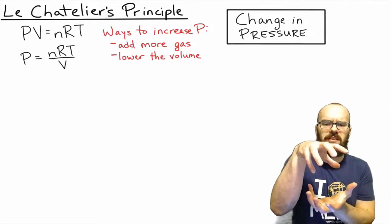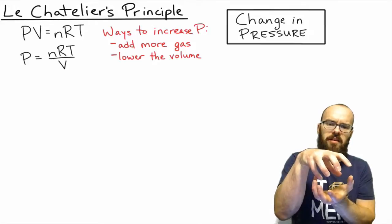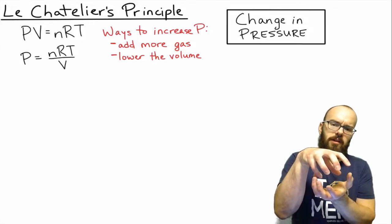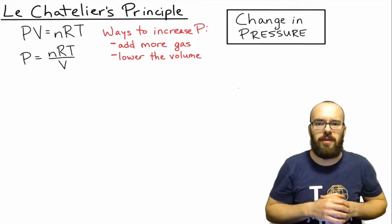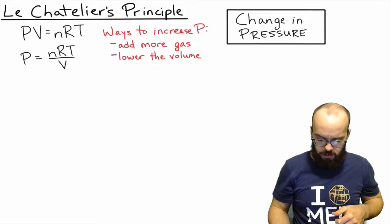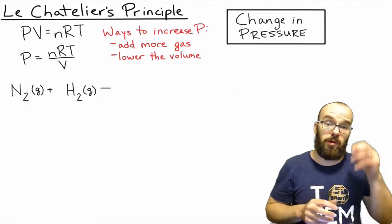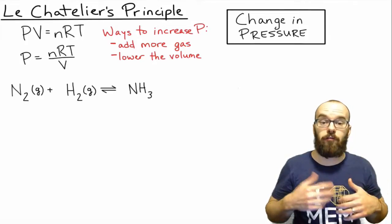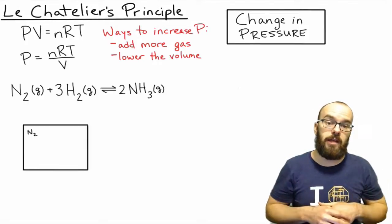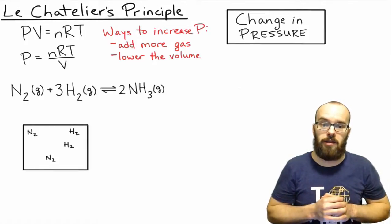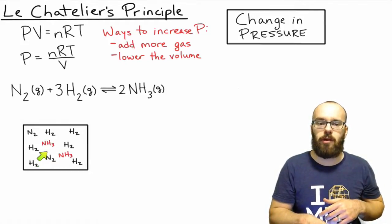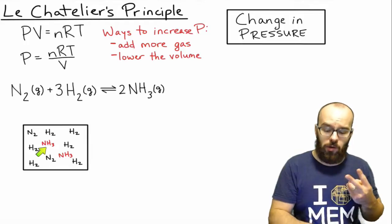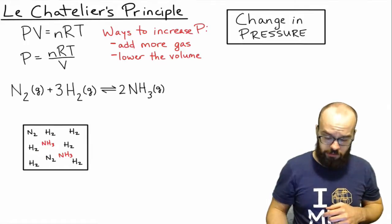We can also lower the volume to increase the pressure. If you think about compressing a gas, that's going to decrease the volume and therefore increase its pressure. Let's take a look at the reaction we've been dealing with — the formation of ammonia gas from hydrogen and nitrogen. In this container, I've got an equilibrium mixture of ammonia, nitrogen, and hydrogen. We're going to do two things to it.